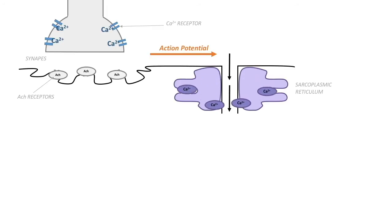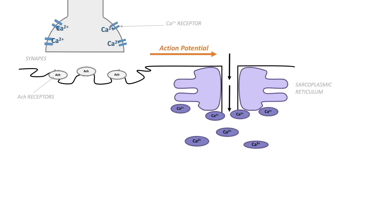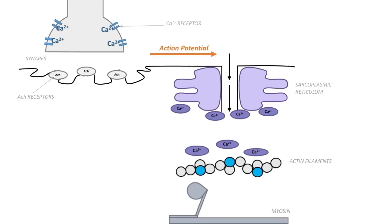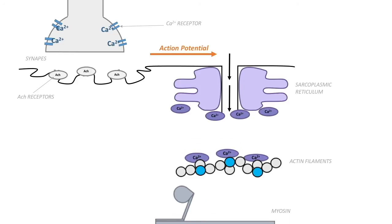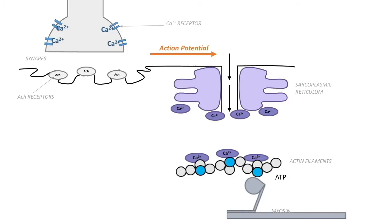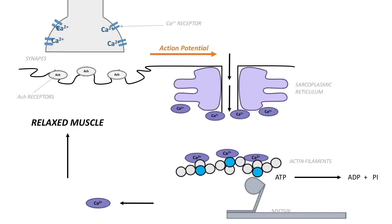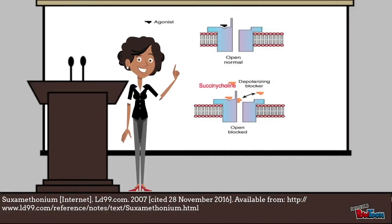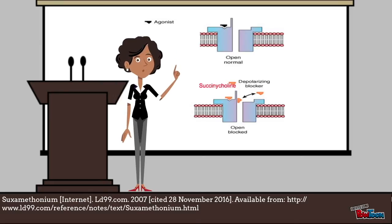This action potential causes calcium to be released from the sarcoplasmic reticulum, which causes contraction whereby myosin cross bridges alternately attach to actin and detach, releasing energy by ATP hydrolysis. The action potential then ends and calcium is returned to the sarcoplasmic reticulum. The muscle then returns to a relaxed state. Succinylcholine is a depolarizing neuromuscular blocker used to produce muscle relaxation.